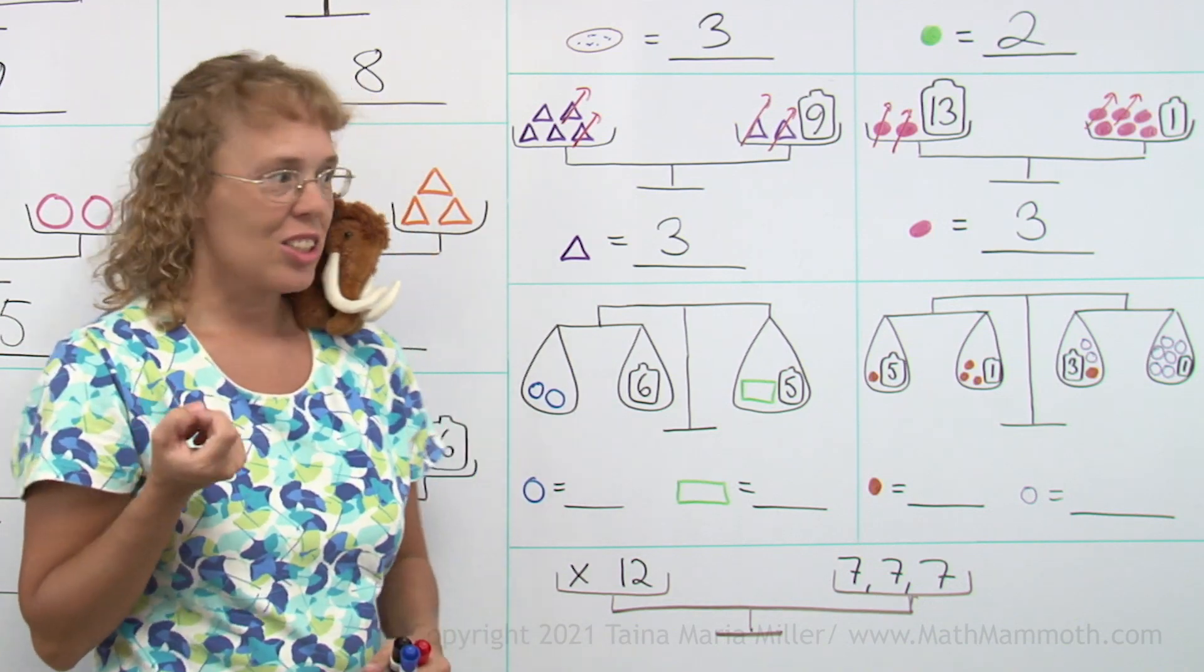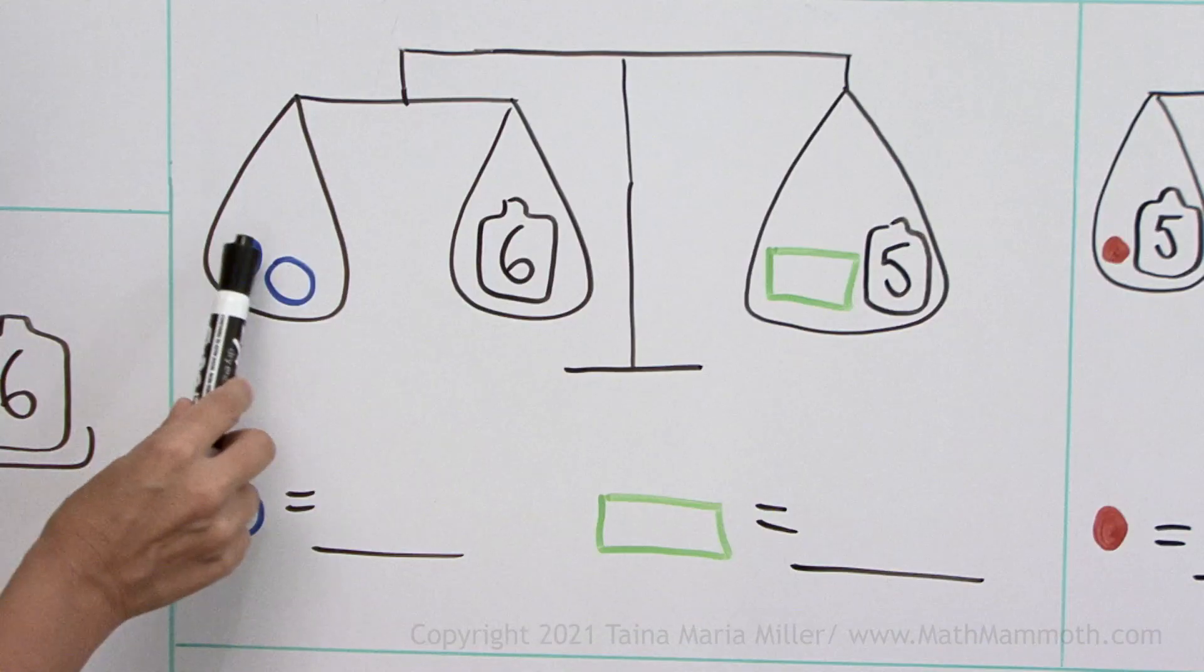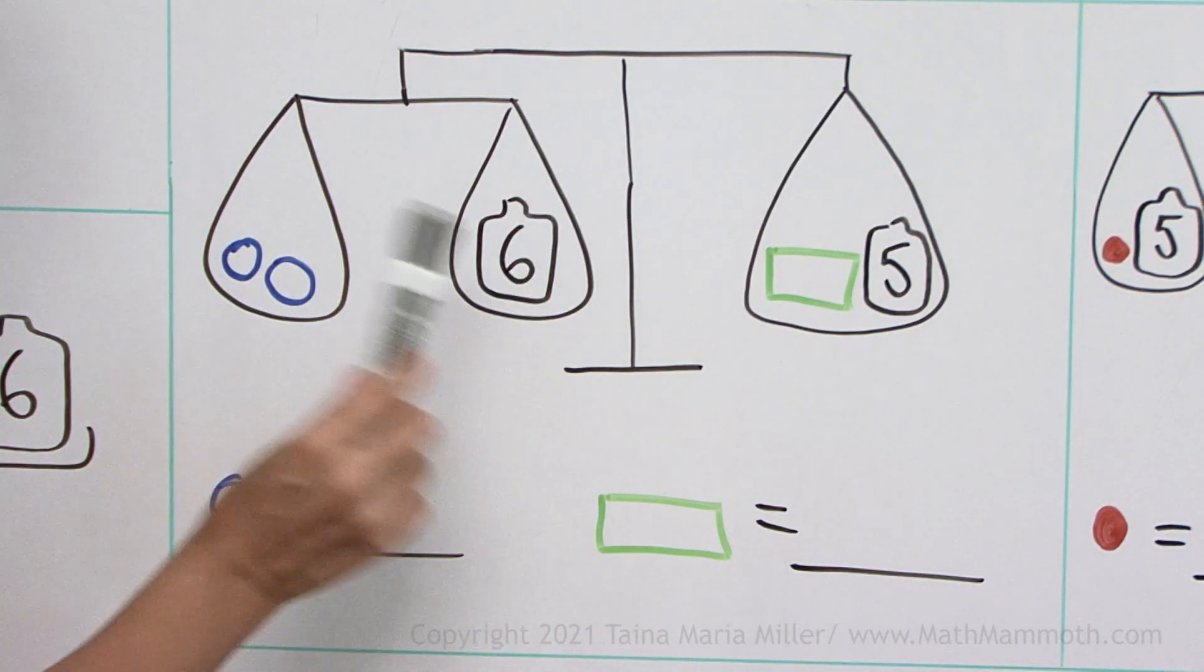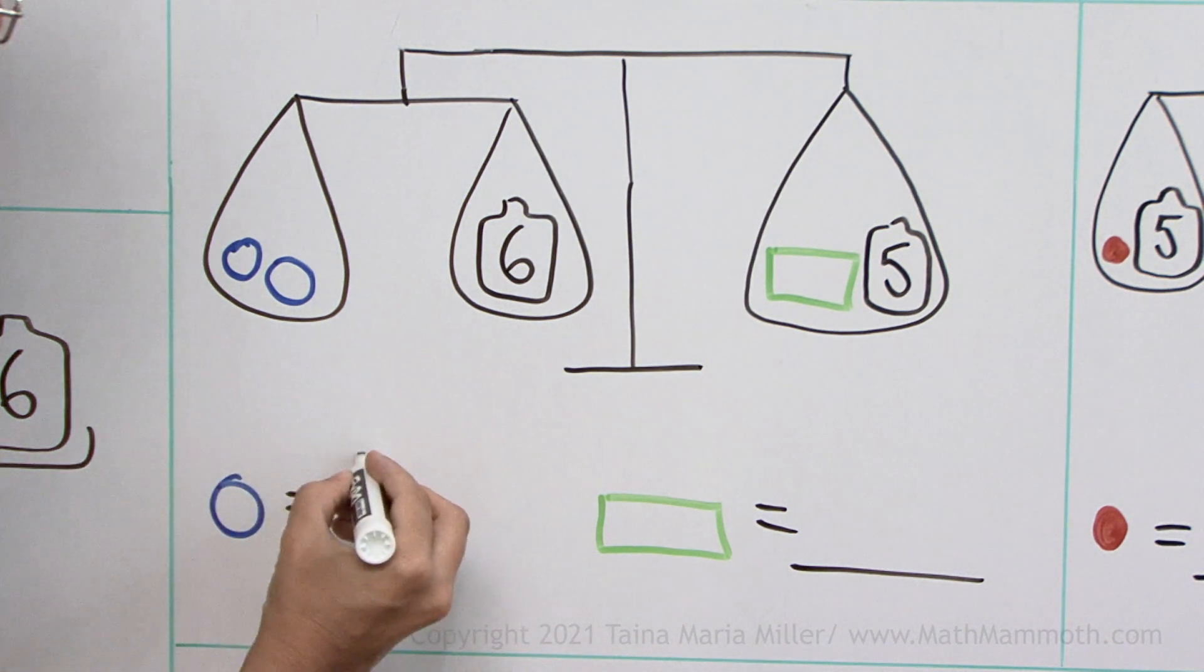And of course from that we can now easily solve this blue circle. Two of these weighs six. So the blue circle is equal to three.